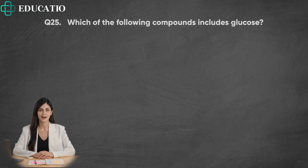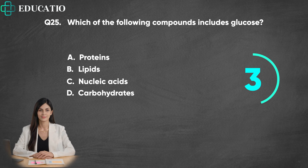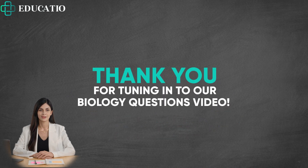Question 25. Which of the following compounds includes glucose? A. Proteins. B. Lipids. C. Nucleic acids. D. Carbohydrates. Answer: D. Simple carbohydrates are simple sugars. Complex carbohydrates are simple sugars linked with covalent bonds.